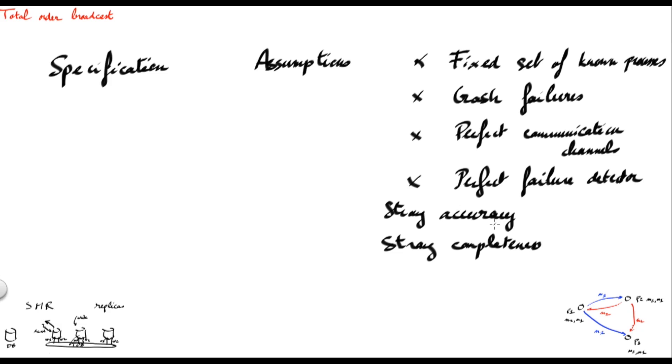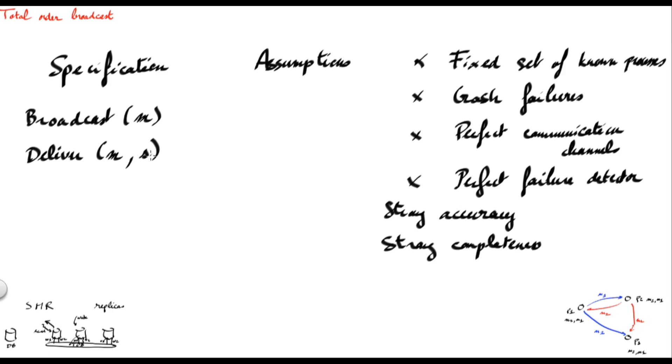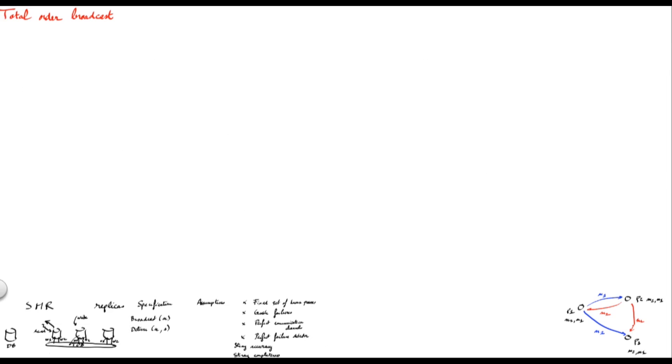The interface that is used by processes using a Total Order Broadcast protocol is the following. Processes can broadcast messages using a broadcast method that takes as parameter a message M. Then, the protocol implements an upcall, called deliver, that is used by the protocol to deliver a message M, sent by a sender S to the process executing the protocol on that given node.